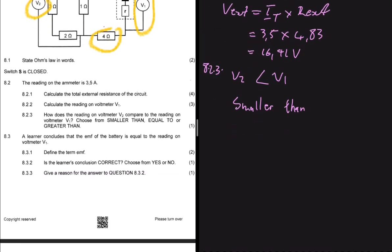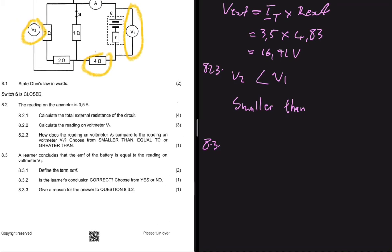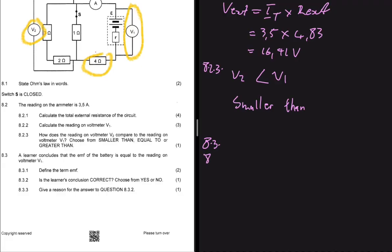Moving to 8.3: Elena concludes that the EMF of the battery equals the reading on voltmeter V1. Question 8.3.1 asks you to define EMF — I'll let you do that one. Question 8.3.2 asks whether Elena's conclusion is correct. The answer is no — that is not true.